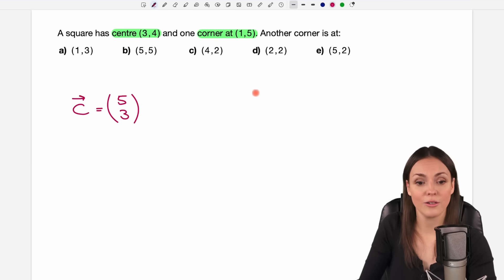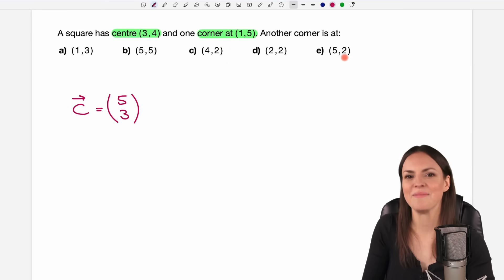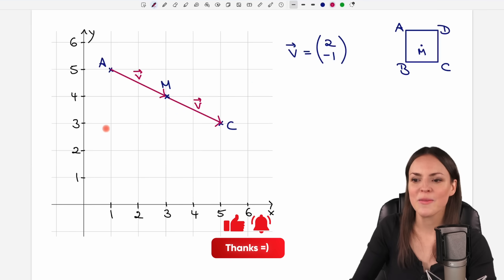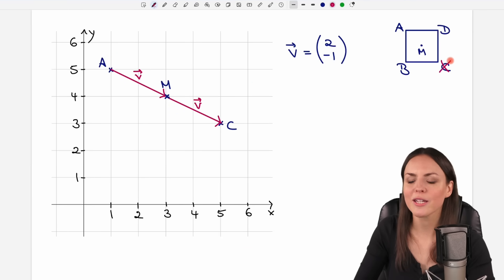And we go back to our answers and check if (5,3) is one of them. Of course not. But that doesn't mean that this is wrong. It just means they were not looking for C. Of course not, because it was the easiest corner to find. So they were not looking for C here. Maybe D, maybe B. Let's try and find D first.